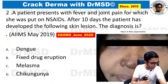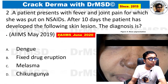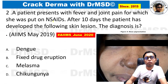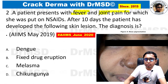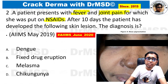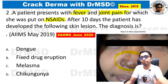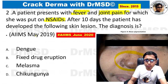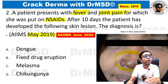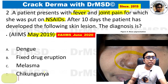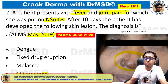This is a repeated question. A patient presents with fever and joint pain for which she was put on NSAIDs. After 10 days the patient developed hyperpigmentation over the nose. This was asked in May 2019 and also June 2020. The diagnosis is chikungunya, and this hyperpigmentation over the nose is given a specific name — 'chick stain.'